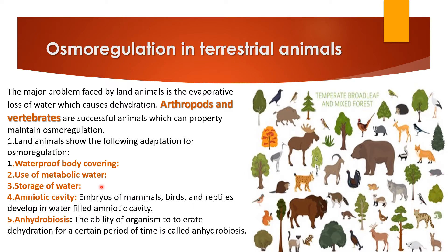Additionally, terrestrial animals have an amniotic cavity, which is present in mammals and protects the embryo because it is a water-filled cavity, providing moisture to eggs and young ones. Anhydrobiosis is the ability of an organism to tolerate dehydration for a certain period of time — not permanently, but for a limited time. These are all the different aspects which help terrestrial animals to maintain their water content inside the body.